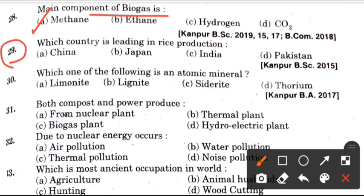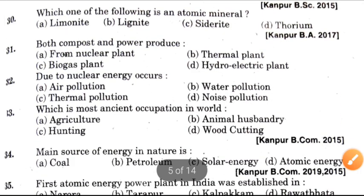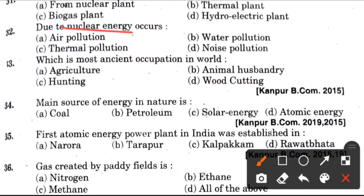Next question: Which country is leading in rice production? Answer is A, it is China. Thirty-first question: Which one of the following is an atomic mineral? Answer is D, it is thorium. Next question: Both compost and power produced? Answer is C, which is biogas plant. Next question: Due to nuclear energy, which pollution occurs? Answer is C, thermal pollution.